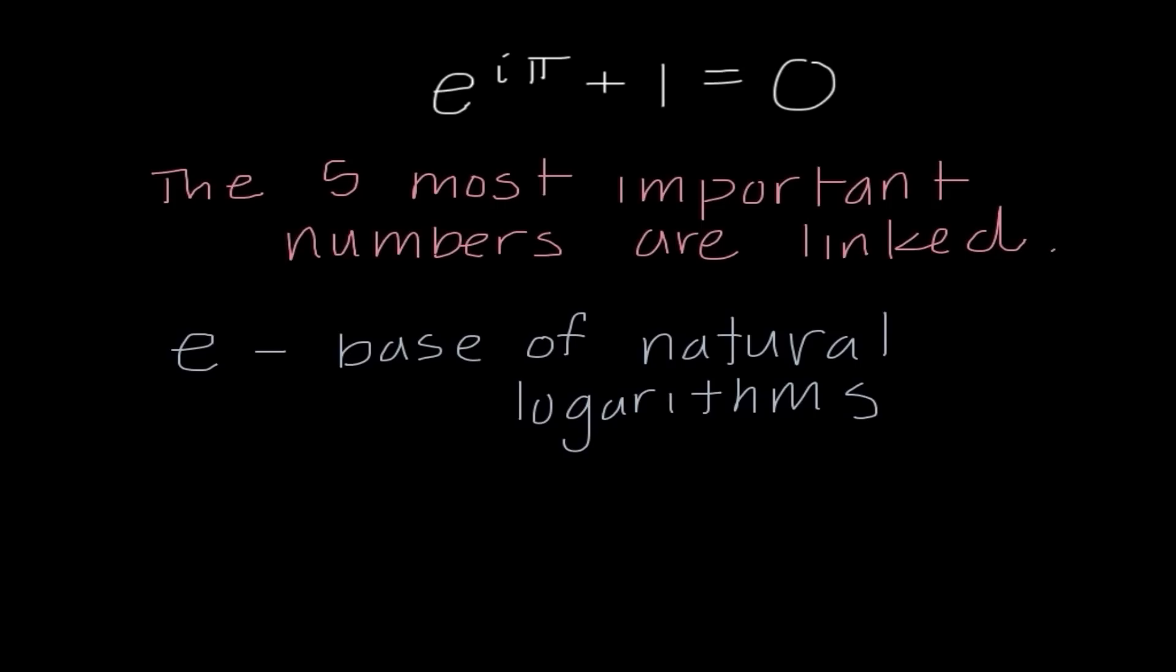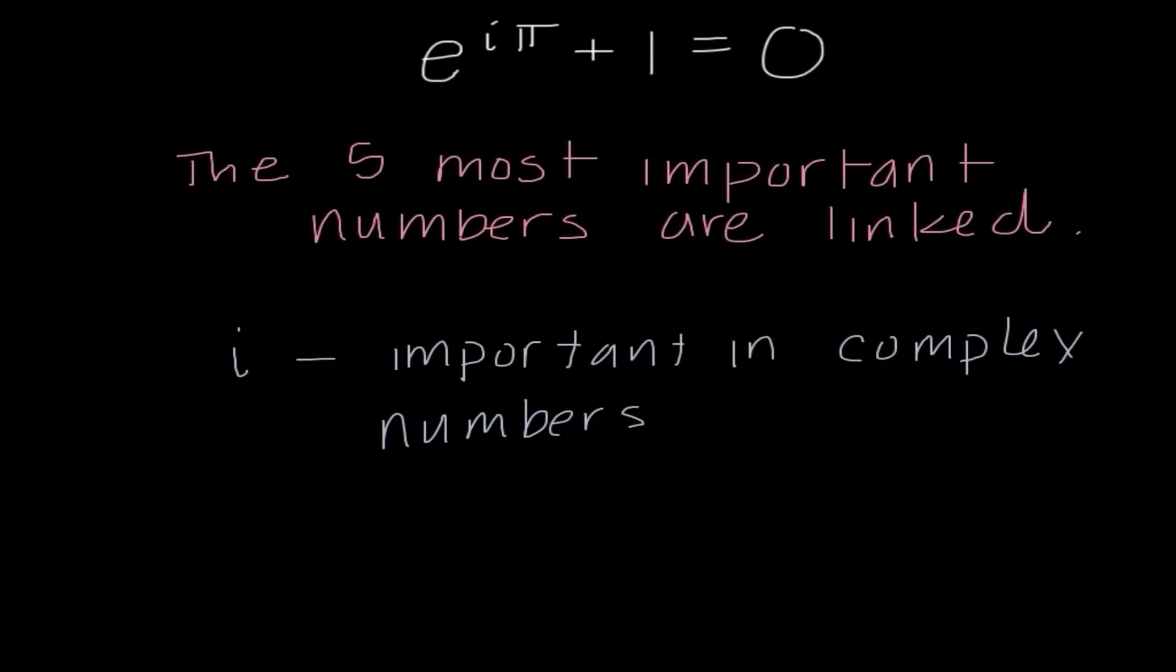E is the base of natural logarithms. And we are going to talk about E a lot today and get into natural logarithms this chapter. And lastly, even though you don't necessarily love it, we do need i because that's very important in complex numbers. So Euler managed to take these five important numbers that are all different from one another and link them in this equation.